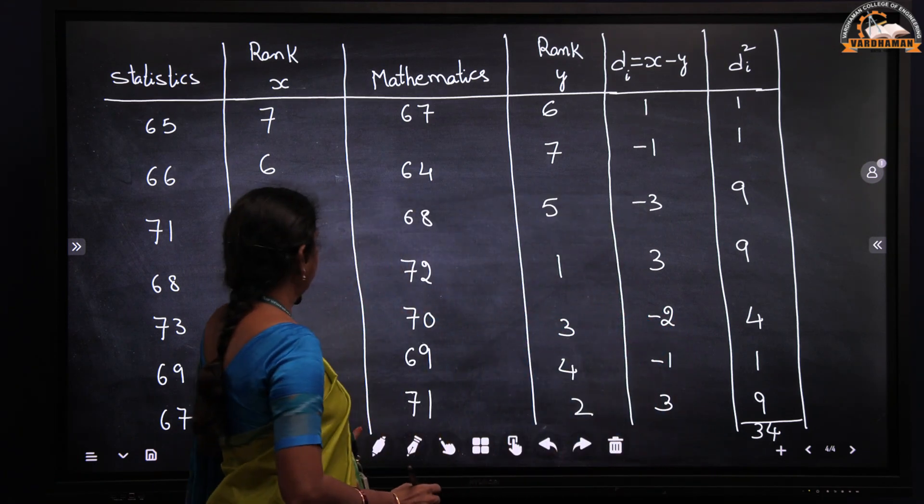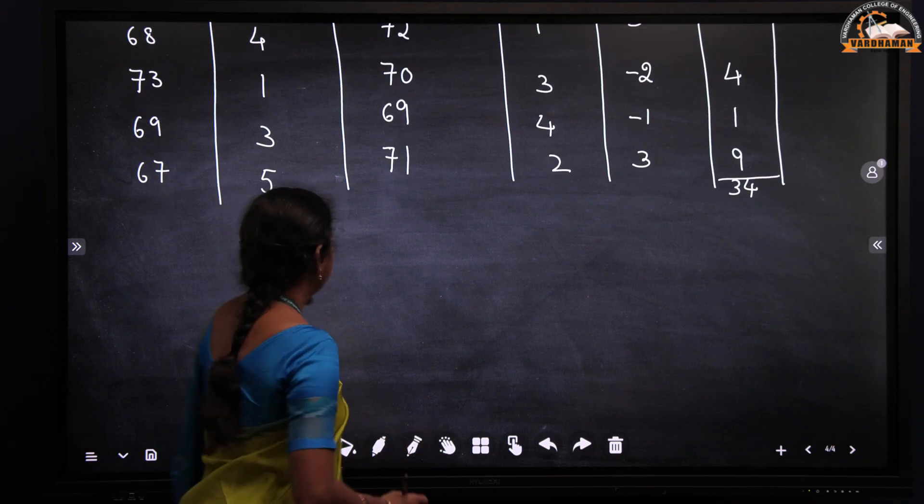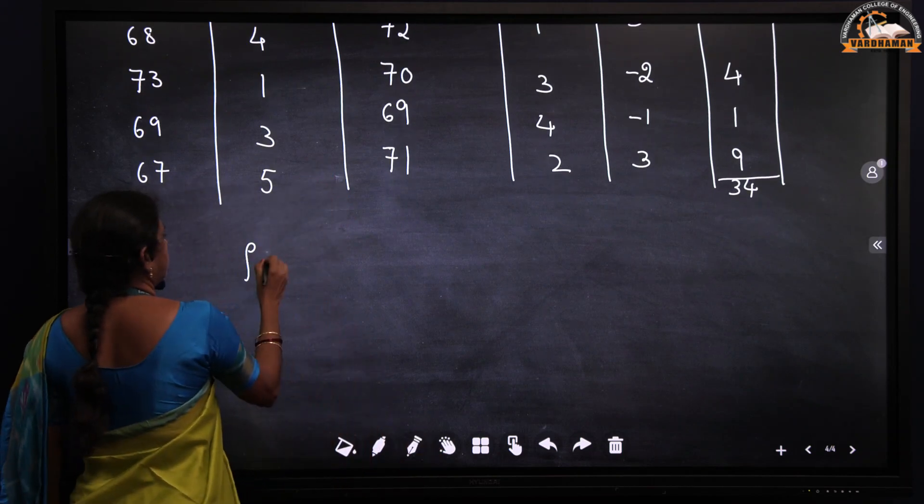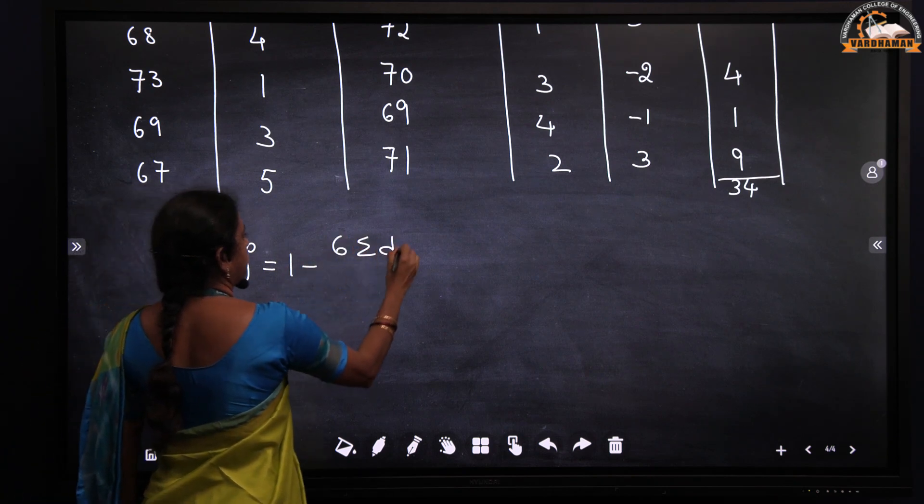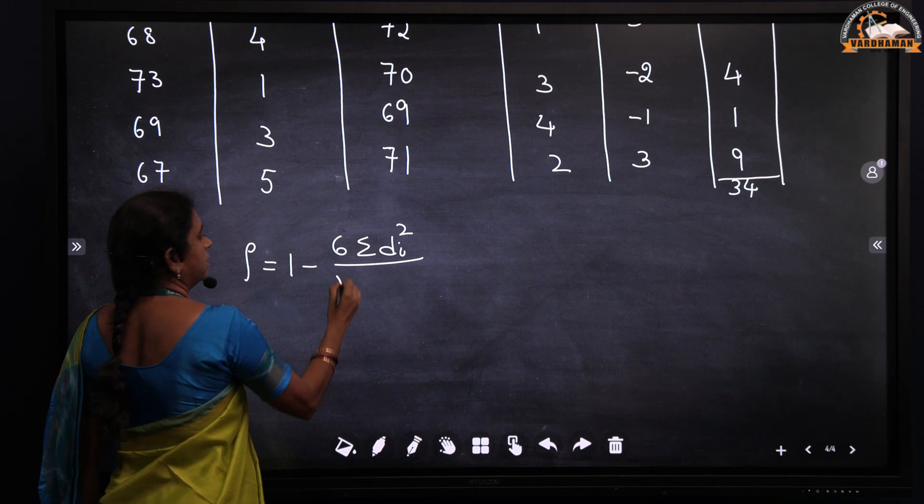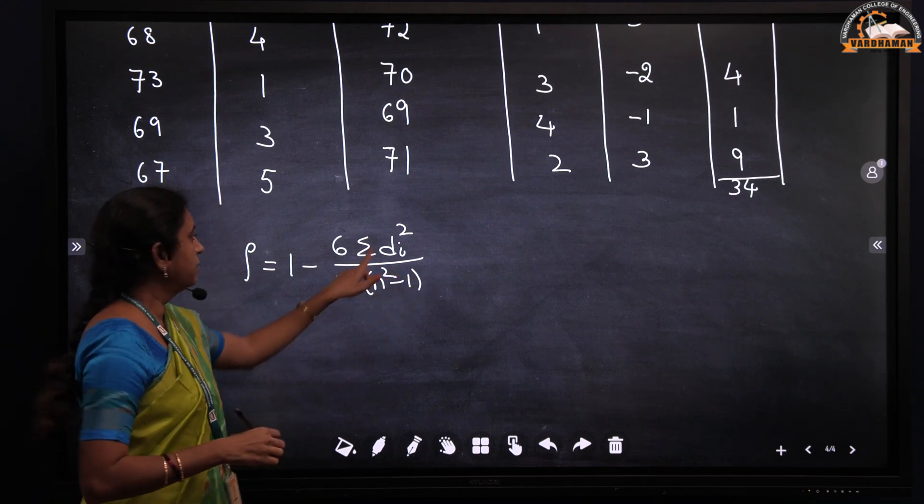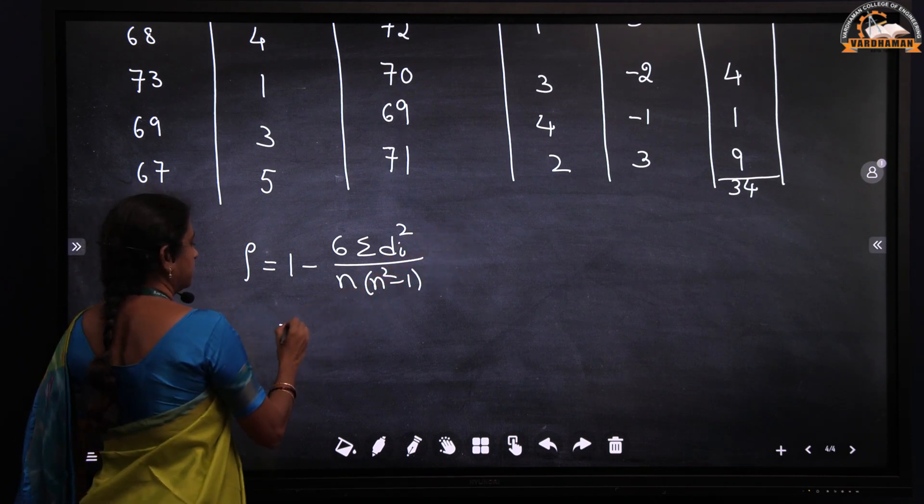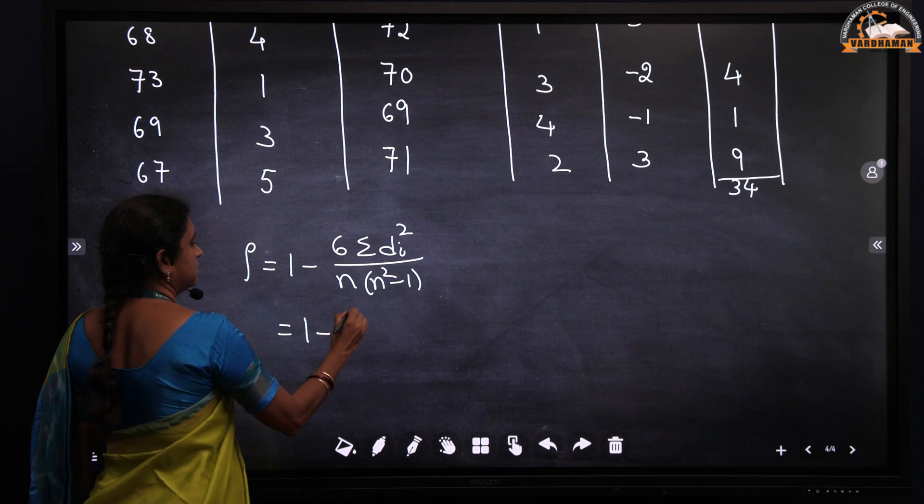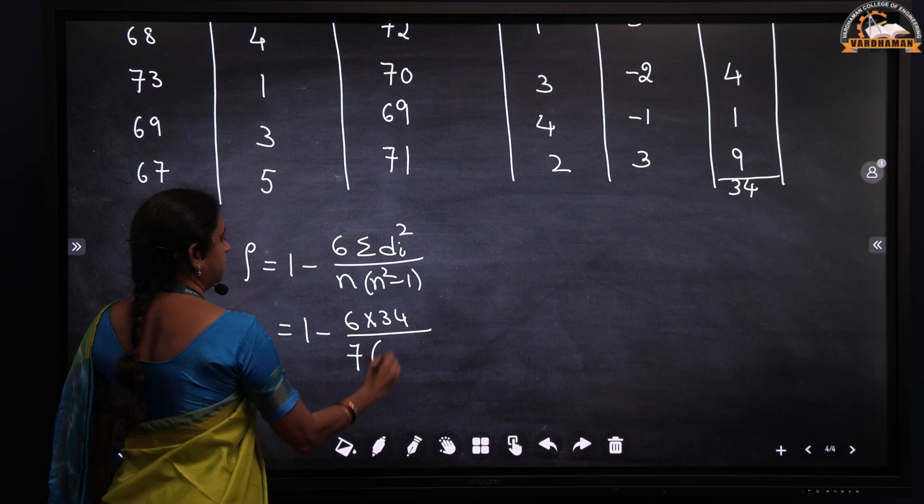Now we will find out rank correlation coefficient using summation di square value. So we know that the Spearman rank correlation coefficient is given by 1 minus 6 into summation di square by n into n square minus 1. Summation di square value is 34 and we know that there are 7 observations. So this will be 1 minus 6 into 34 by 7 into 7 square minus 1.